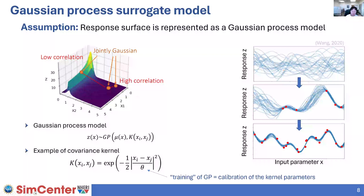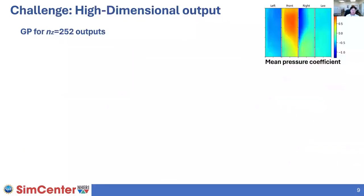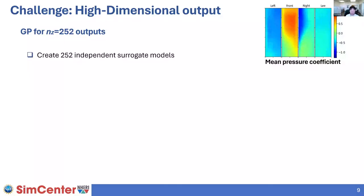In this entire process, there is a very important parameter representing how fast the correlation decays as the distance between two points increases. Calibrating this parameter takes the major part of the Gaussian process model training process. This is especially important because we are dealing with high-dimensional output — when we naively apply the Gaussian process model to our problem, we realize that our outcome dimension is 252.